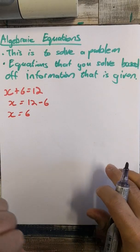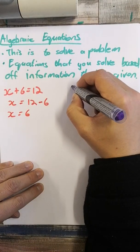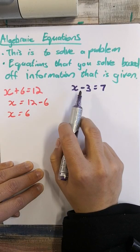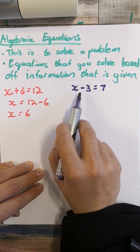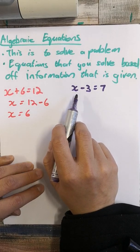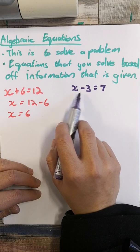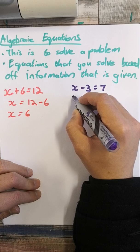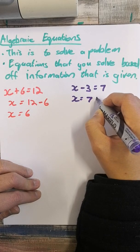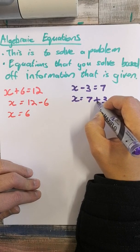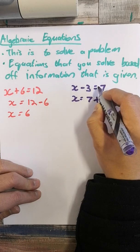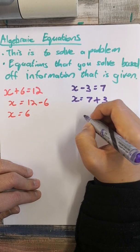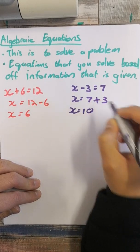Same thing will happen in this equation: x minus 3 equals 7. I'm left with subtraction, so I look for like terms — there are none. I take the 3 over the equal sign, so it becomes x equals 7 plus 3. The negative changes to a positive. 7 plus 3 is equal to 10.